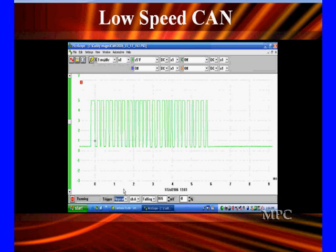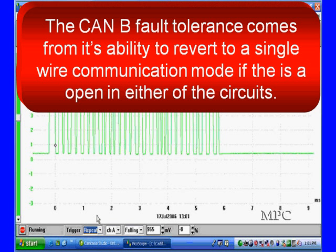This is low speed CAN - one channel going from zero up to five volts. We don't need the other half, this one will survive. So what you've looked at is that CAN-B is fault tolerant. It comes from its ability to revert to a single wire communication mode. Low speed CAN is already starting off with one signal missing, and the circuits are all made to work that way.